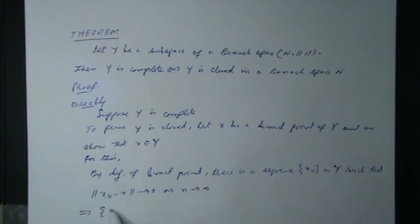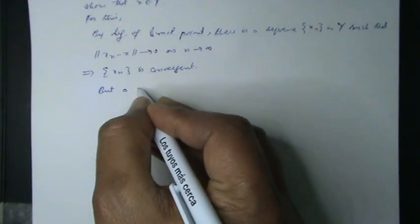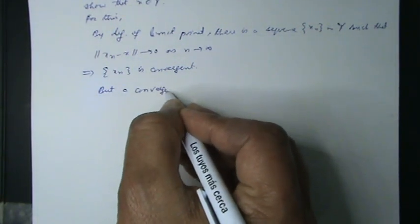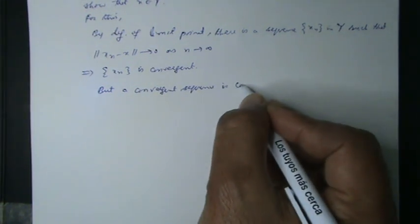This implies the sequence x_n is convergent. But we know that a convergent sequence is a Cauchy sequence.